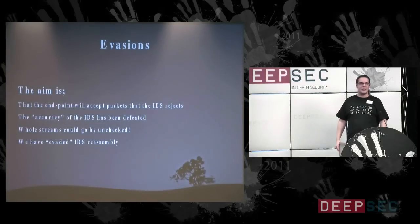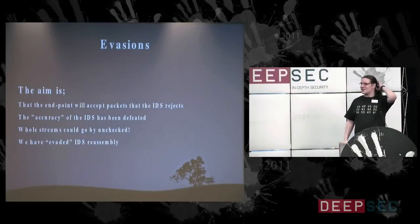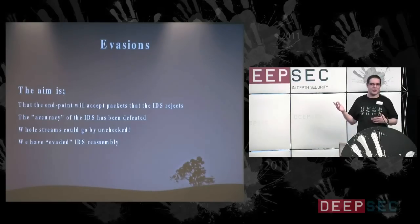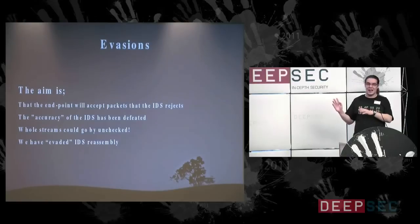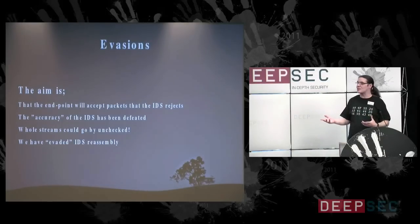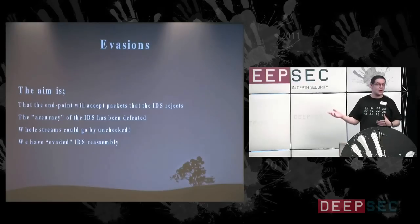Evasions — if insertions are making the box see something, then evasions are making the box not see something. By far a lot more dangerous. If you are susceptible to an evasion attack, then you are flying blind — that E box I mentioned earlier is not passing any data up anymore. You can miss whole streams, and we are effectively attacking the accuracy of our IDS box. Whole streams can go by unchecked.